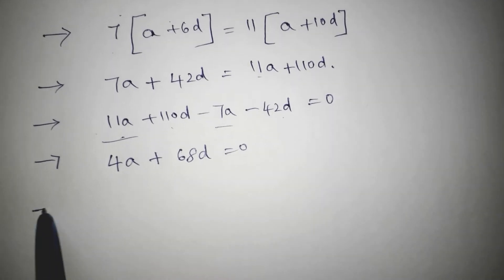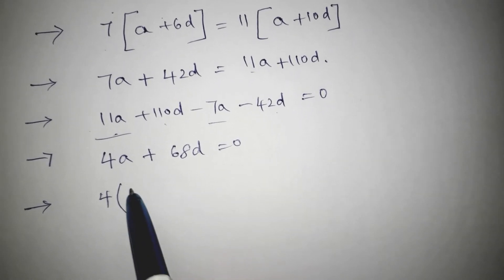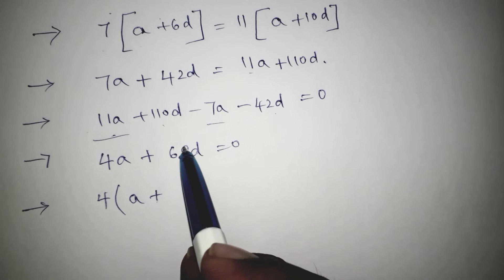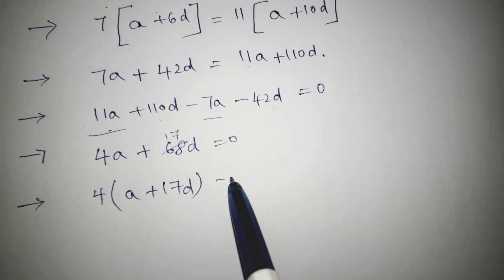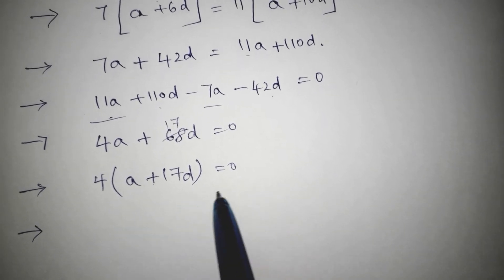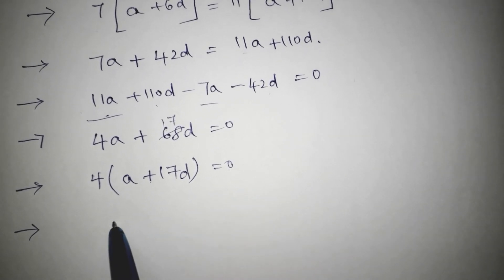Now, if we take 4 common, a plus 4 times 17, 17d equals 0. So, if we send 4 to the other side, 0 by 4 is 0.